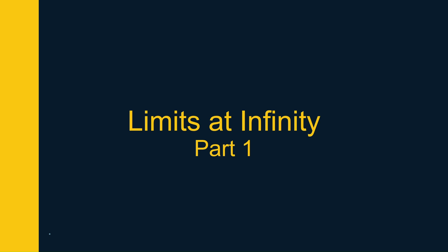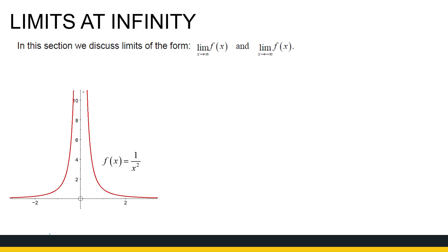We're going to look at limits at infinity in two parts. What we mean by that is we're looking at what happens to our function values as x approaches either positive or negative infinity. We want to see if that limit exists. Remember, a limit exists if we go towards a number.